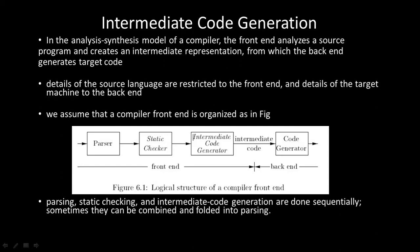The compiler front-end is organized as follows: Parser, Static Checker, and Intermediate Code Generator. These three phases generate intermediate code in sequence. Sometimes they can be combined and folded into parsing. The basic idea is that the front-end generates intermediate code, which becomes the input for the code generator, and the code generator generates the target code.